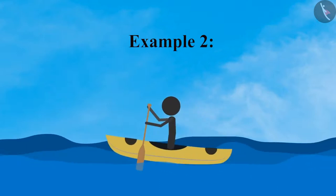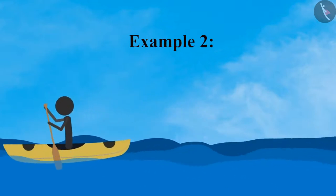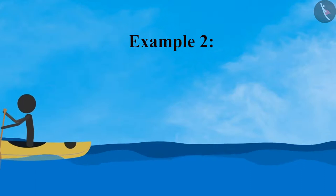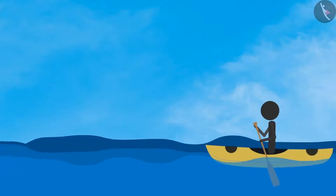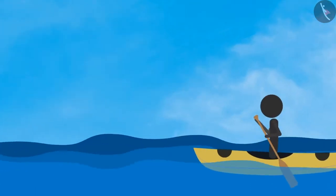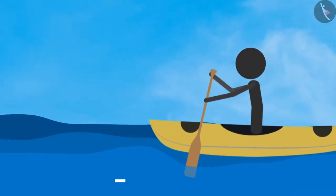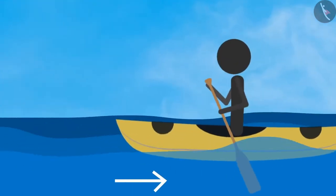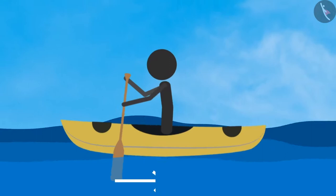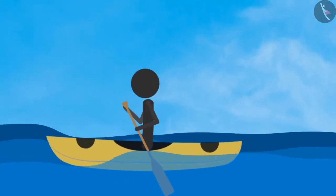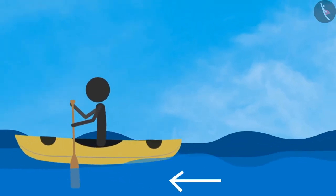Now let us consider the case of rowing a boat. While rowing a boat, pulling the oar in the backward direction through the water results in the generation of an equal and opposite force, which in turn helps the boat move forward.